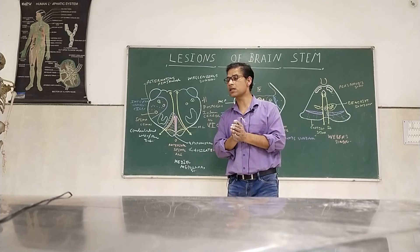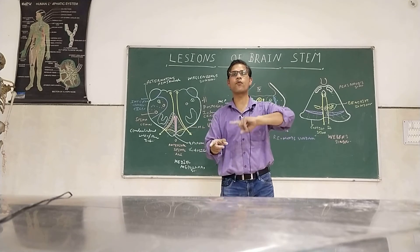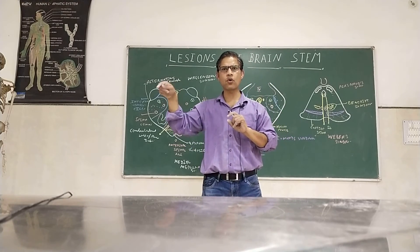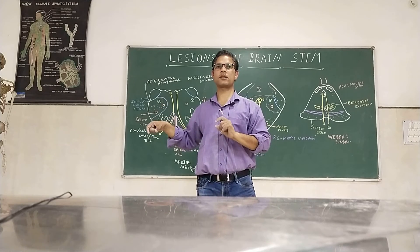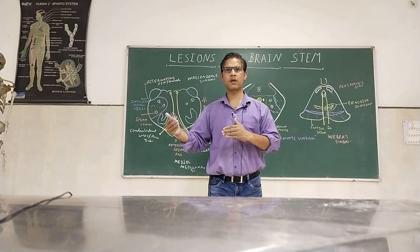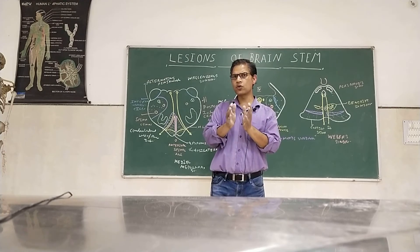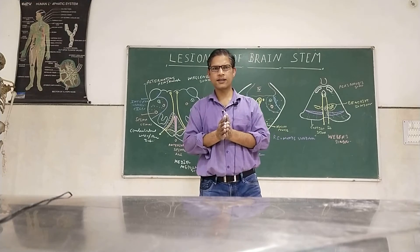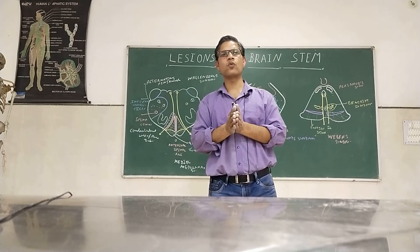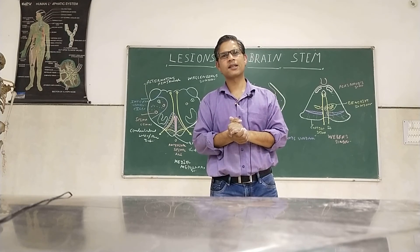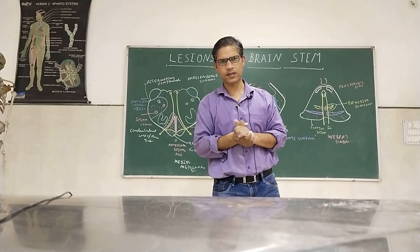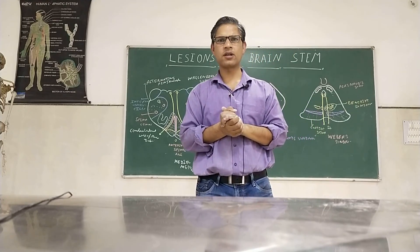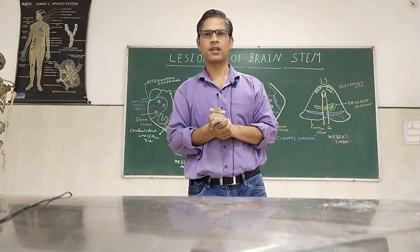When a question asks for the anatomical basis, you must clearly define which tract and which nucleus are causing which presentation — don't only note the symptomatic presentation. With these few thoughts, that is the end of the brain stem topic. We will move toward the upper part of the brain — thalamus, internal capsule, basal ganglia, and onwards. If you have questions, write in the inbox. Thank you.